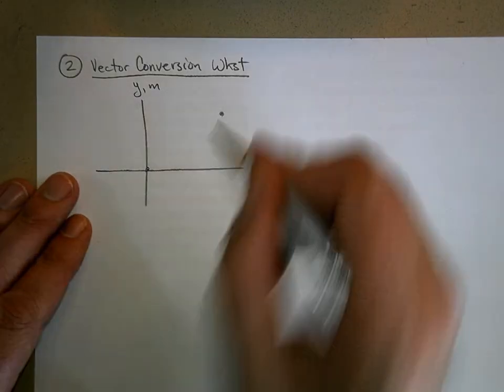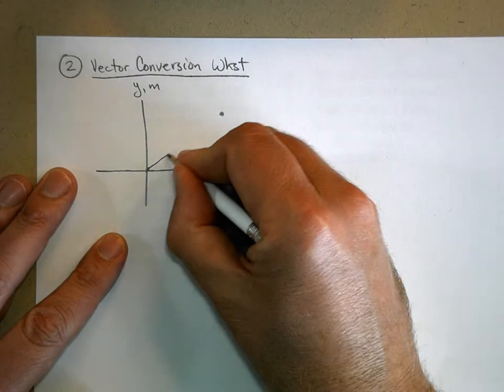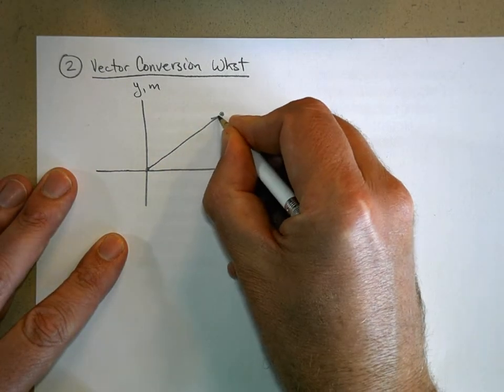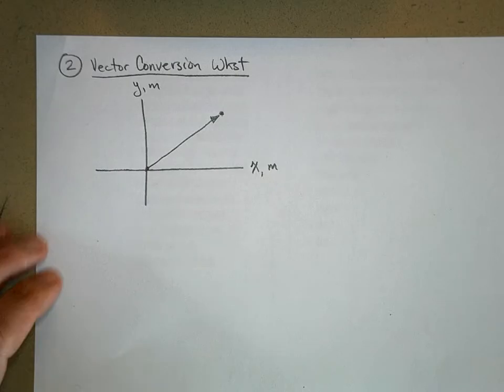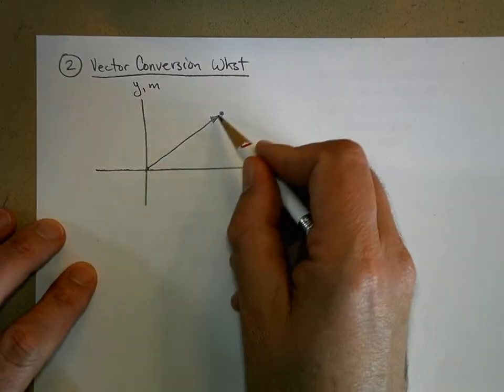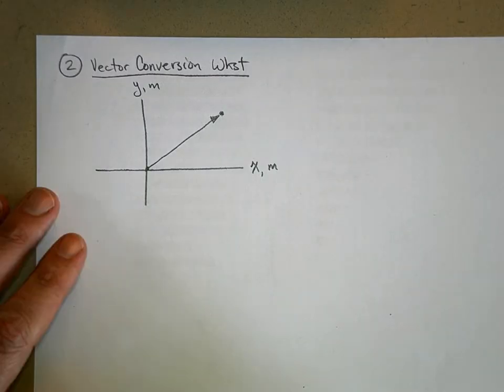So what is the position of this object? Well, there's two ways of expressing that. First of all, I can express it with a distance and an angle. Like how far away is it from the origin? What distance is it away from the origin?